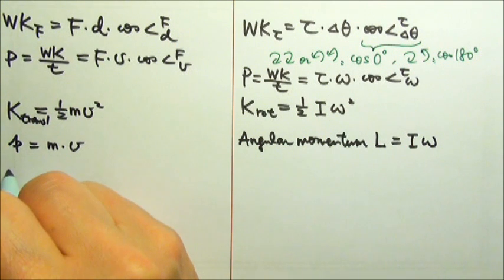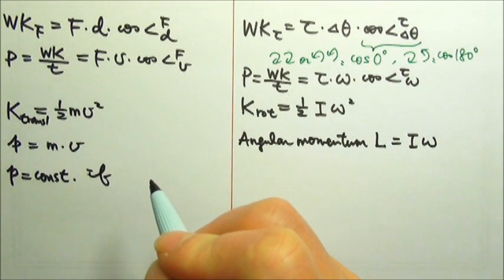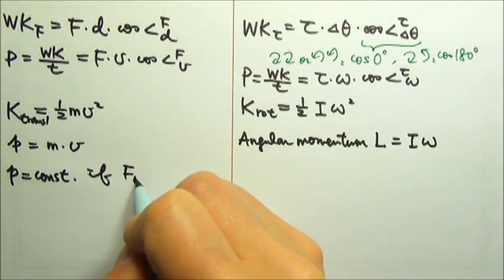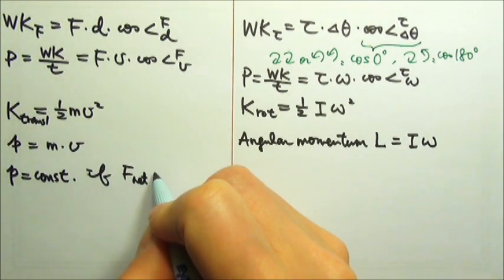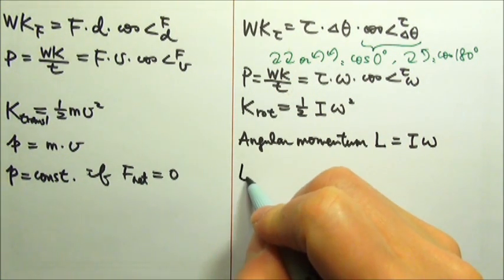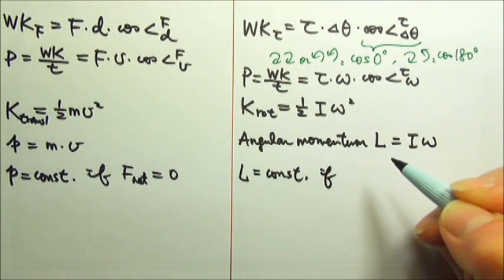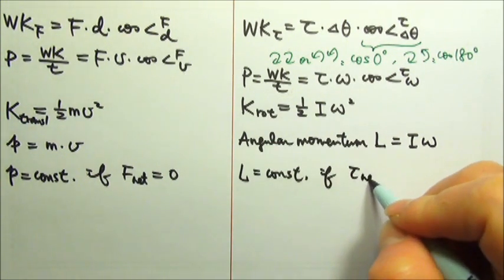And we know that the momentum is conserved if the net force on the system or the object is zero. The momentum of an object is conserved if the net force on the object is zero. The momentum of a system is conserved if the net force on the system is zero. So angular momentum is conserved if the net torque is zero.